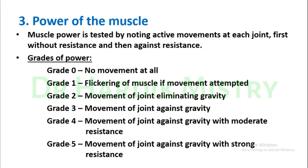Muscle power is tested by noting active movements at each joint, first without resistance and then against resistance. This is what we mean by muscle power and how to check it.